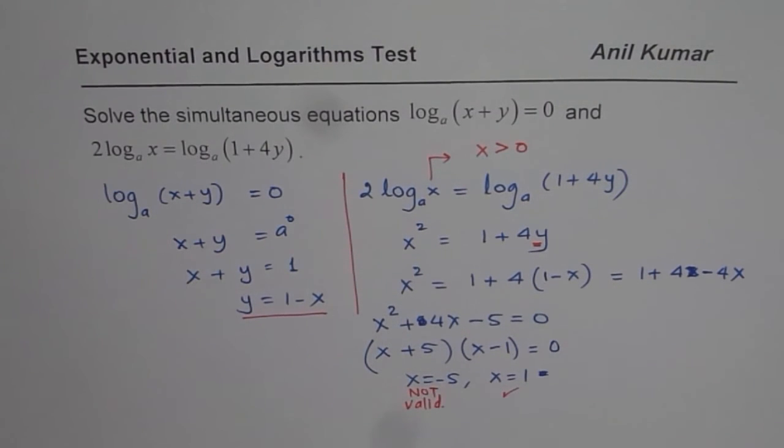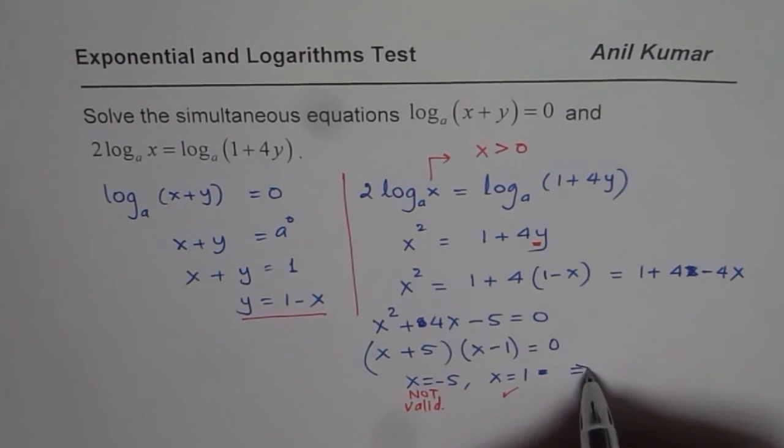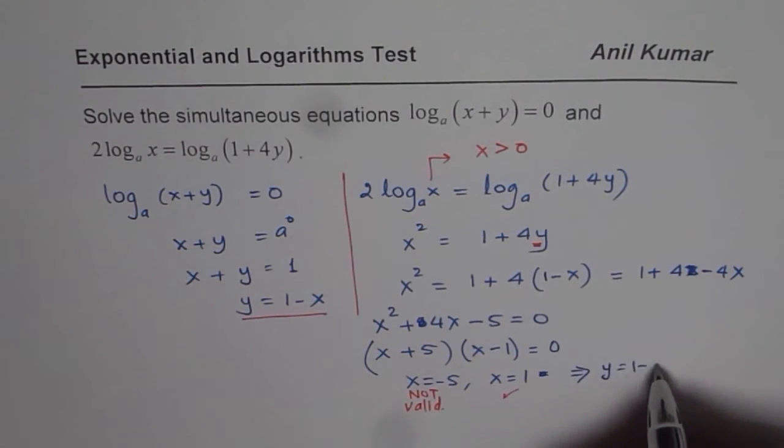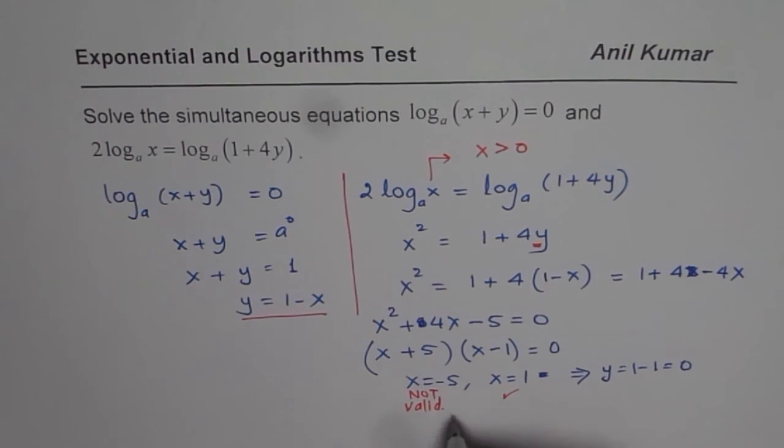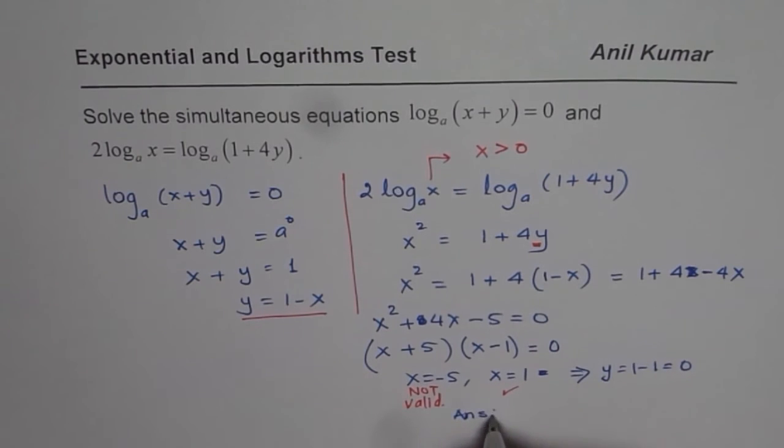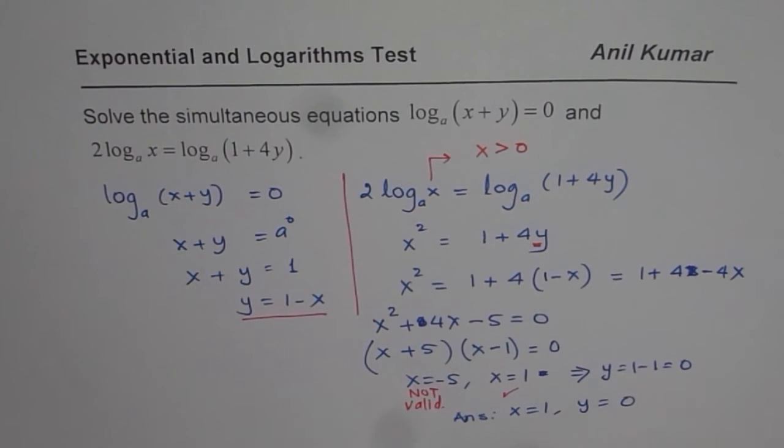But that seems to be okay, right? So if I write x equals 1, what do I get for y? So if I substitute x equals 1, then this implies that y equals 1 minus 1, that is 0. So therefore, we get our answer and the solution is x equals 1 and y equals 0.